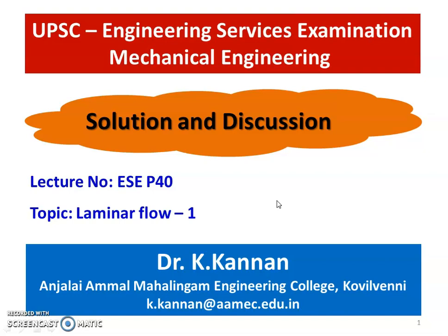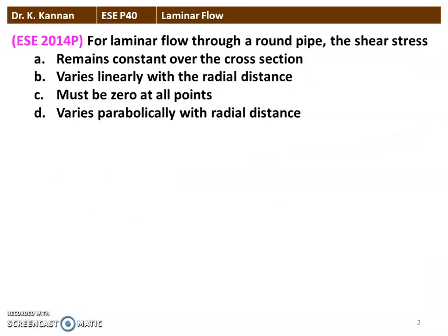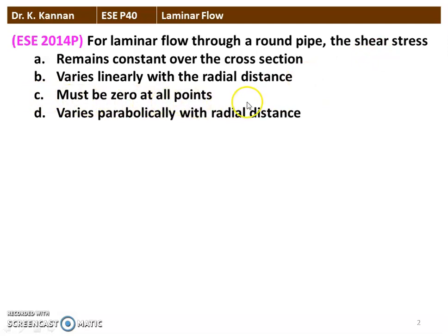In fluid mechanics, we take a few questions from laminar flow. The first question from the 2014 question paper: for laminar flow through a round pipe, what is the shear stress? There are four options: the shear stress remains constant over the cross section; the shear stress varies linearly with the radial distance; the shear stress must be zero at all points; the shear stress varies parabolically with radial distance.